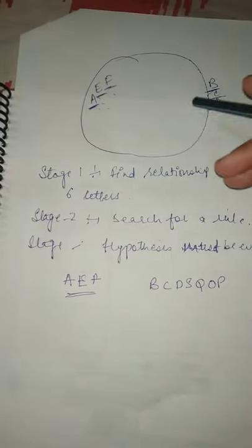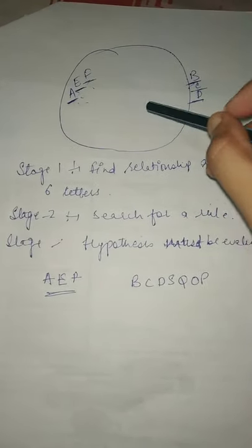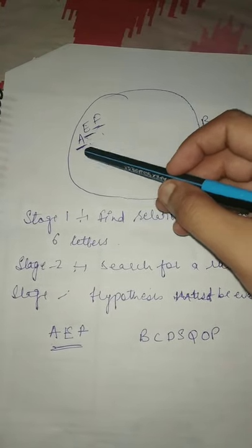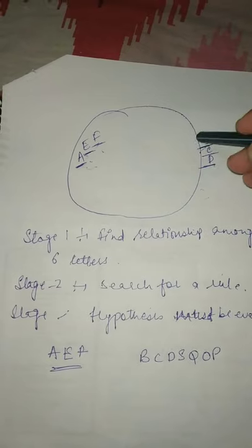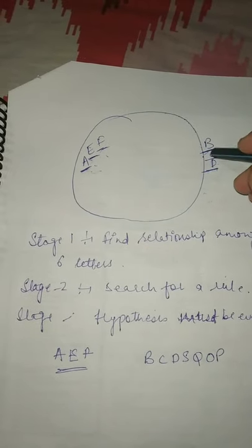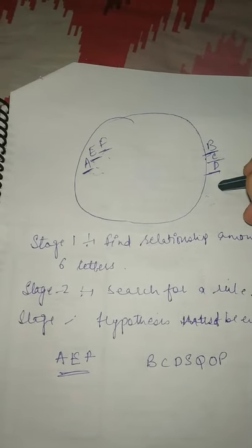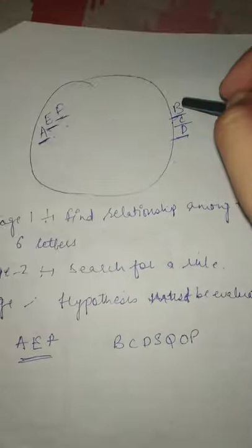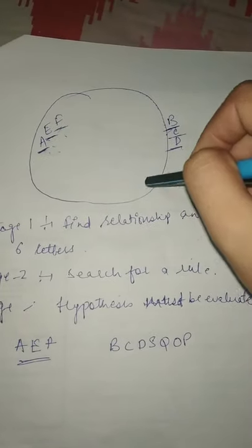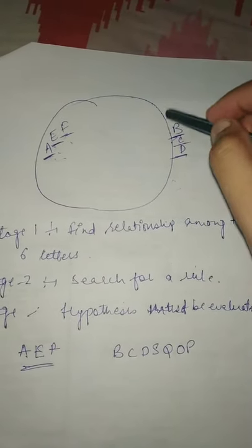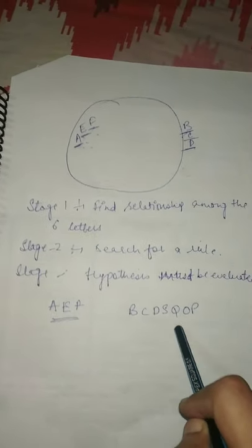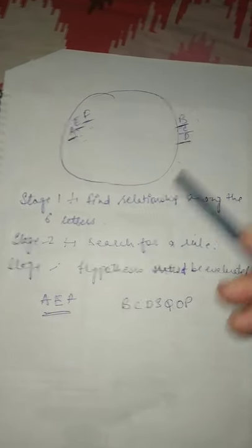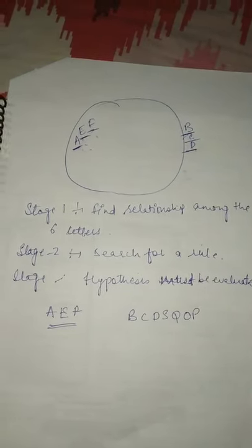Suppose ये एक बहुत complex problem है, लेकिन इसका solution बहुत simple है. Like — straight line वाले alphabets A, E, F inside रहेंगे circle के, और curve line वाले alphabets B, C, D outside हैं. जो भी curve alphabet हैं जैसे B, C, D, S, Q, O, P — वो circle के outside रहेंगे.